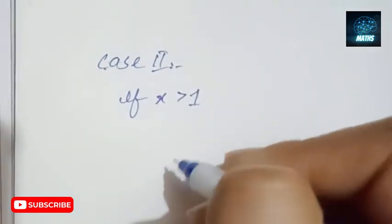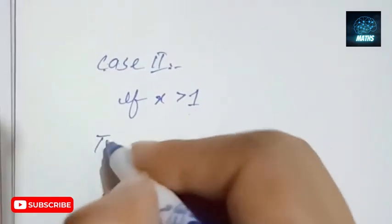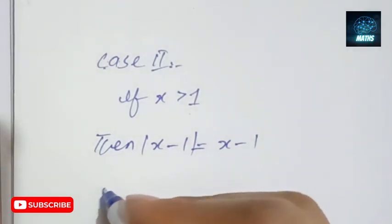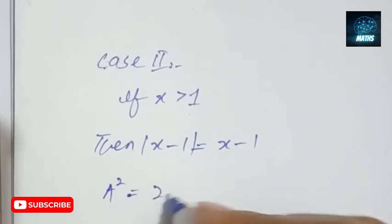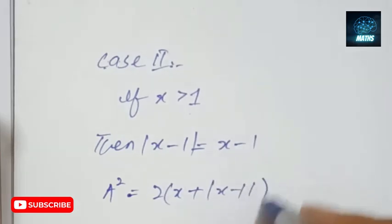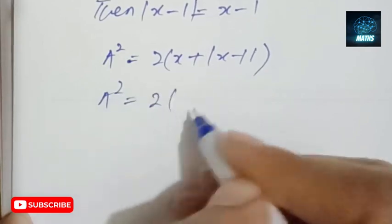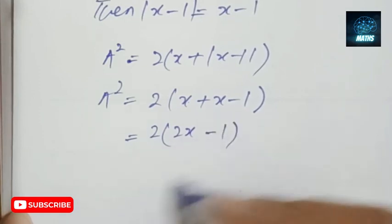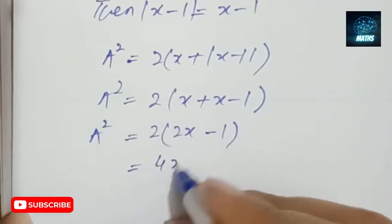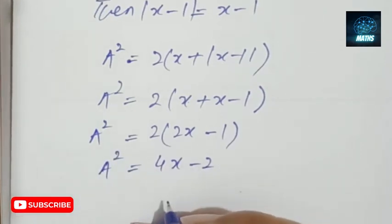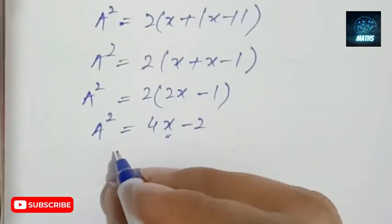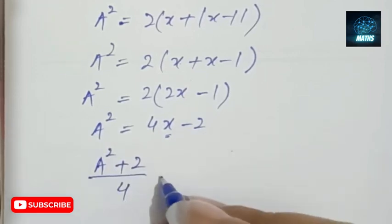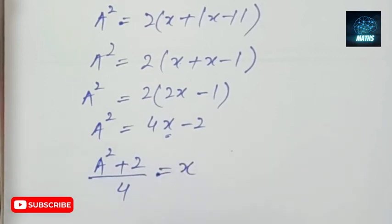Case 2: when x is greater than 1. In this case |x minus 1| equals x minus 1. So the equation a² = 2x + (x − 1) becomes a² = 2x plus x minus 1, which gives 4x minus 2. Therefore x equals (a² + 2) divided by 4.